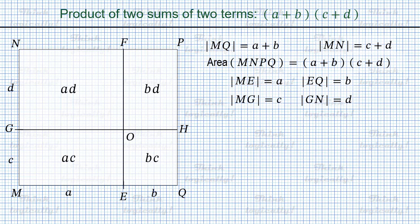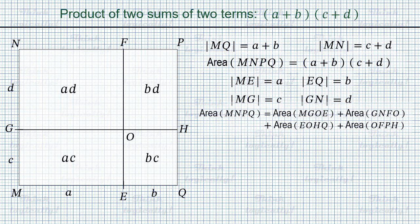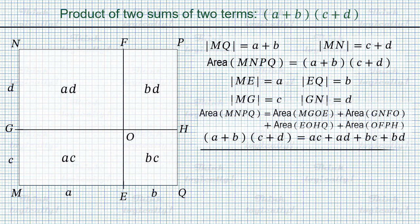The only remaining thing is to write that the area of rectangle MNPQ equals the sum of the areas of the inner rectangles, and substitute the values of the areas. The result is a well-known algebraic identity.